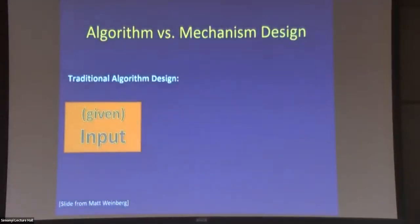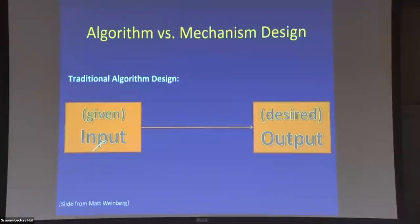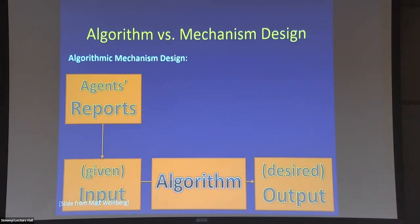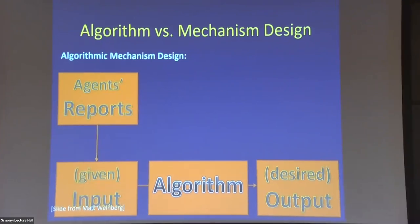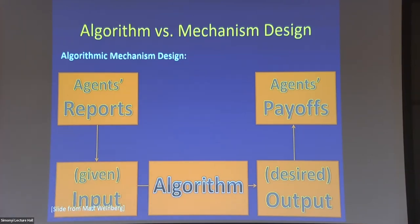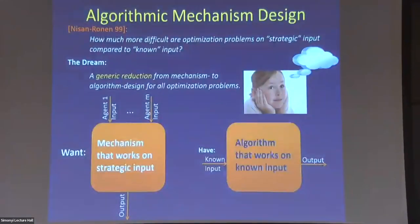This is a talk about mechanism design. The big picture is that we want to take traditional algorithm design — which assumes we have an input and there is an output — and convert it into a mechanism. A mechanism assumes that inputs are not given to us; they come from agents who have their own agenda, and the output translates into an outcome those agents care about.